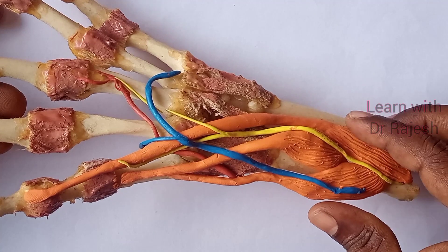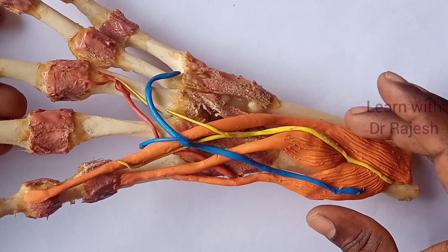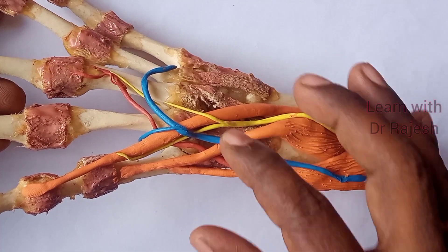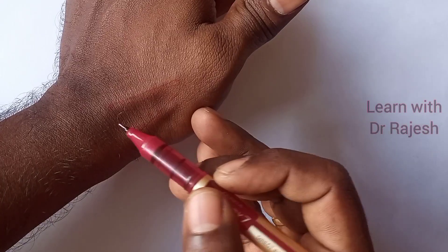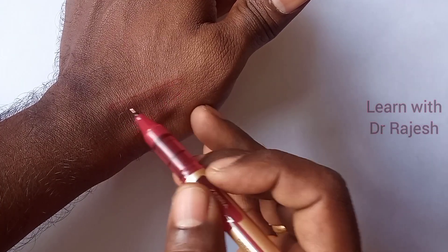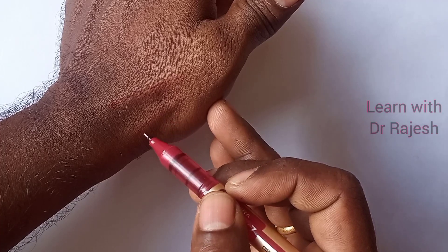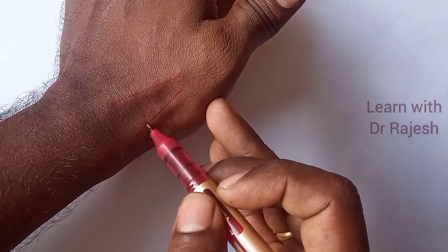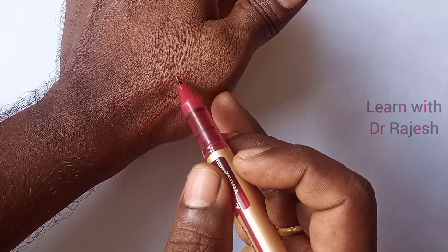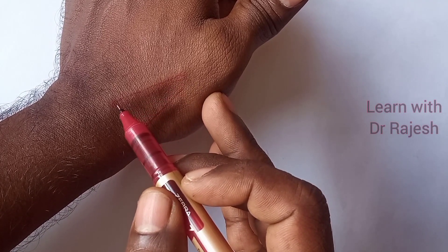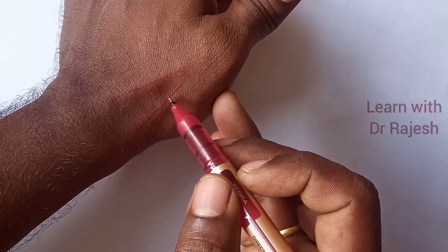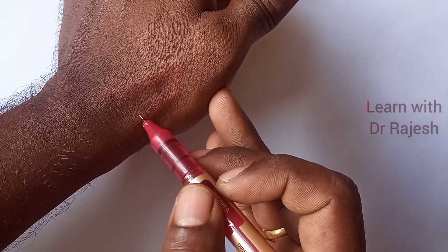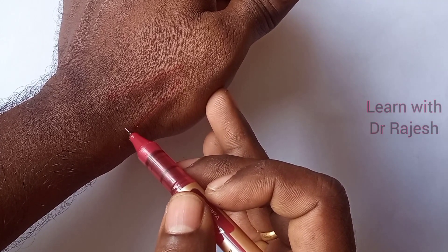Now knowing the insertions and the muscles involved in the formation of the anatomical snuff box, we will learn the boundaries. The medial boundary is formed by the extensor pollicis longus, and the lateral boundary is formed by the extensor pollicis brevis and abductor pollicis longus.